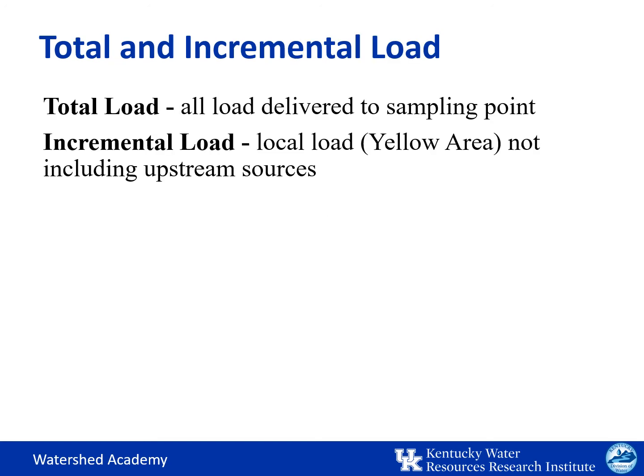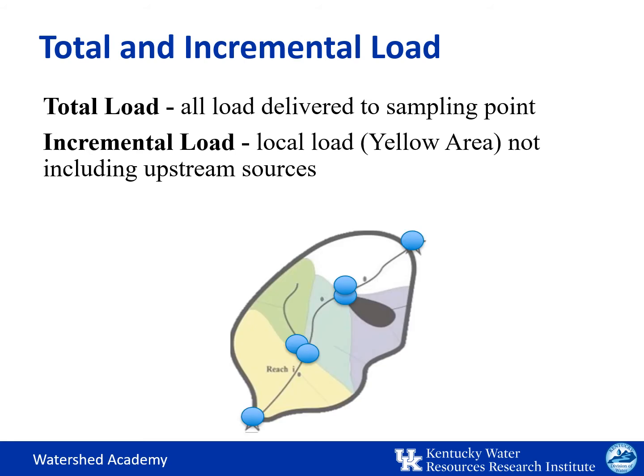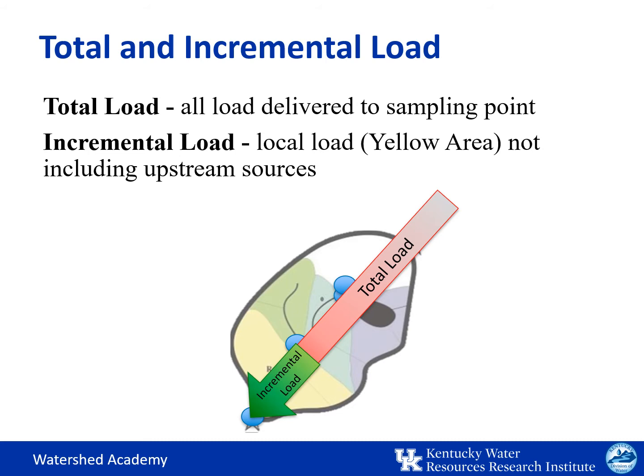We can further define the load as either incremental or total. The total load is everything that's delivered to a given sampling point. For watershed planning, however, you need to know how specific areas contribute to that load. To figure out the loading from a localized area, you'll need to subtract out the upstream loading contributions. Incremental loads refer to the portion of the load from a subwatershed area, as opposed to the total load from the entire watershed.